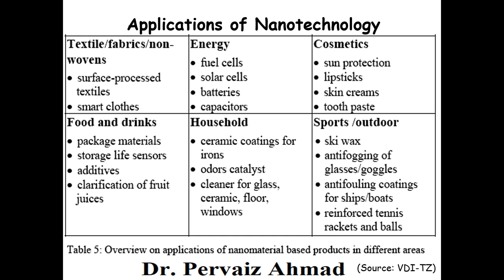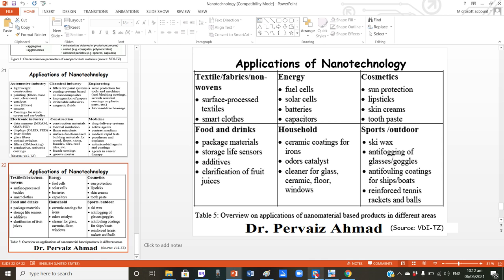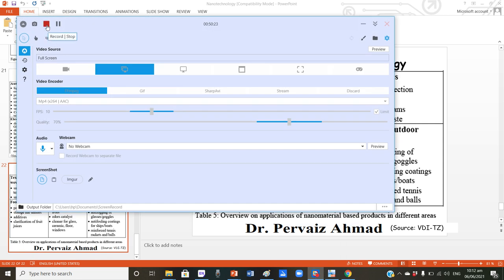In household products, nanotechnology enables ceramic coatings for irons, catalysts, cleaners for glass and ceramic floors, and cosmetics for sun protection, lipsticks, skin creams, and toothpaste that provides better cleaning due to increased surface area to volume ratio. In sports and outdoors, applications include anti-fogging coatings for goggles, anti-fouling coatings for ships, and reinforced tennis rackets and balls. These are some of the applications of nanotechnology and nanomaterials. More detail will be covered in coming lectures.